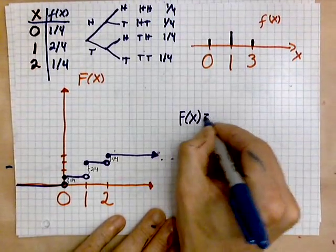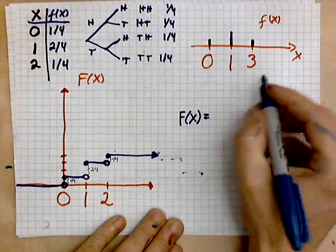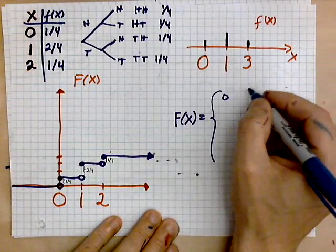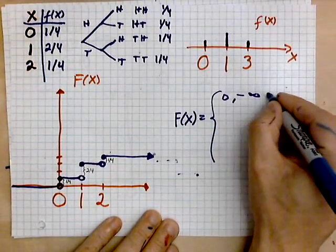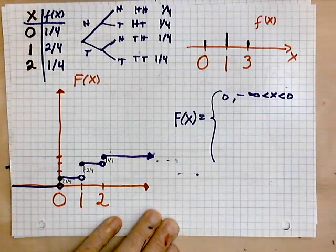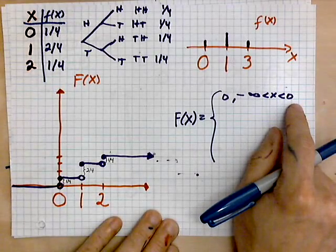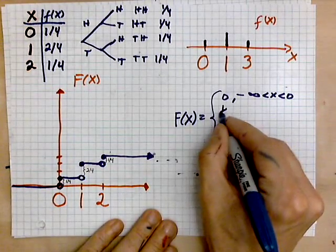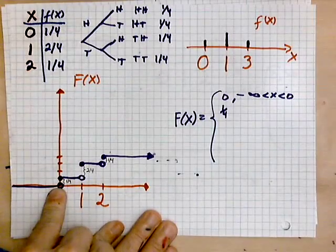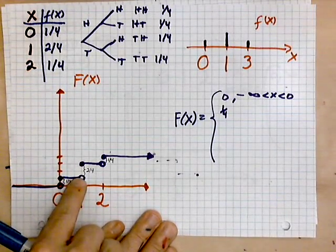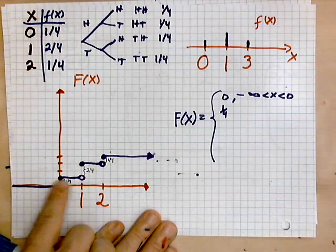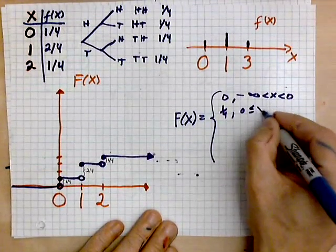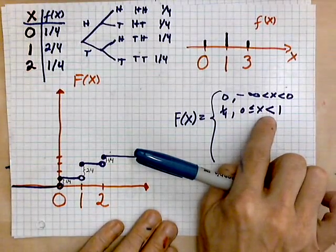Big F of x equals curly brace. So zero between negative infinity less than x, which is less than zero. So no probability between negative infinity and zero. Then there's a jump of one fourth. So that's one fourth. And that holds from zero. That holds from zero up to one. It includes zero, it's solid. It does not include one.